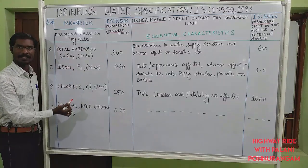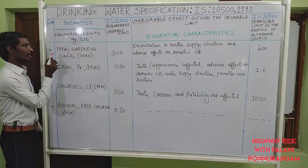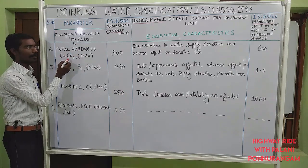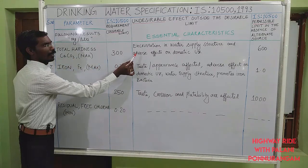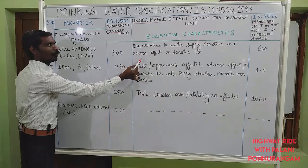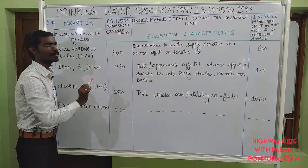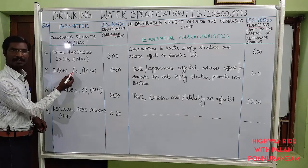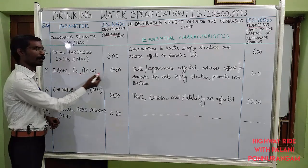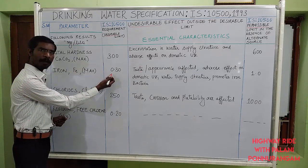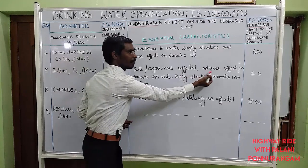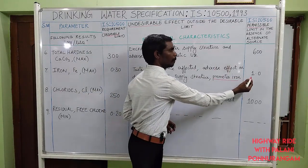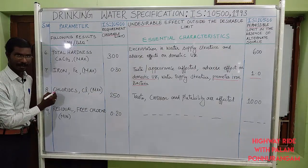These essential characteristics results are followed in milligrams per liter. The sixth essential characteristic is total hardness (CaCO3). The maximum desirable limit is 300. Beyond this, there is encrustation in water supply structures and adverse effects on domestic use. The maximum permissible limit is 600. The seventh essential characteristic is iron (Fe). The maximum desirable limit is 0.3. Above 0.3, taste and appearance are affected, there is adverse effect on domestic use, water supply structures, and iron bacteria are promoted. The maximum permissible limit is 1.